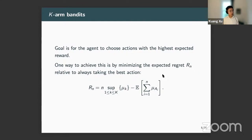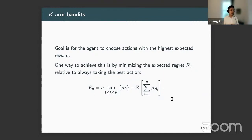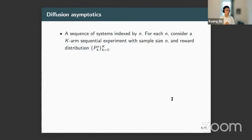A standard goal is for the agent to figure out over time which action has the highest mean reward and achieve the highest expected payoff over n samples. One way to measure success is to minimize expected regret — defined as the difference between your expected payoff relative to the single best action in hindsight. Specifically, R_n is n times the supremum over all mean rewards minus the expected value of your actual performance, μ_{a_i}. That's the standard definition of regret in the stochastic multi-armed bandit problem.